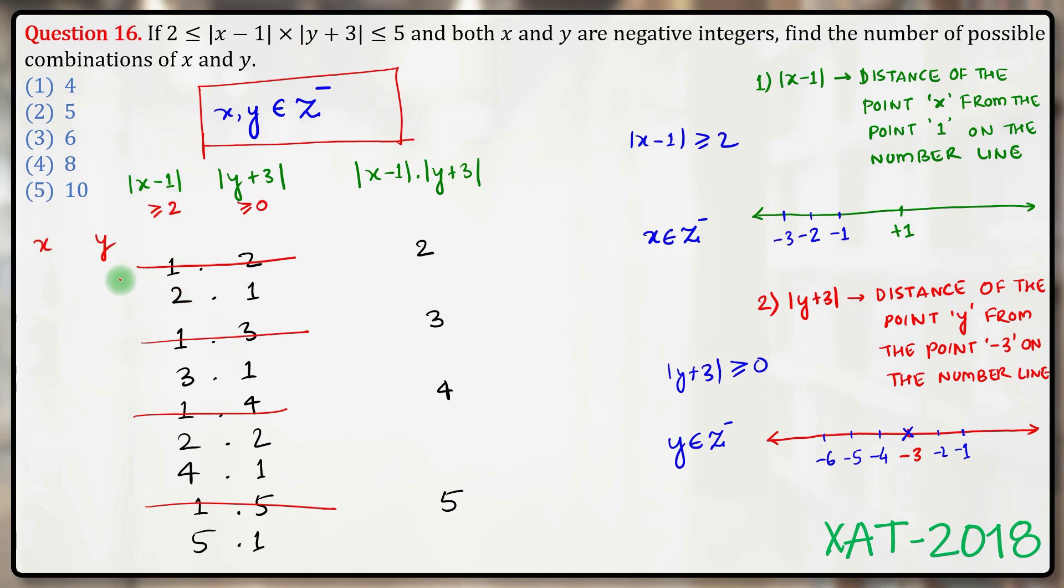For mod of x minus 1 to be 2, x must be minus 1. For mod of y plus 3 to be 1, y can be either minus 2 or minus 4, so two cases here. For mod of x minus 1 to be 3, x must be minus 2. For mod of y plus 3 to be 1, y can be either minus 2 or minus 4, so again two cases here.